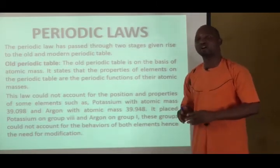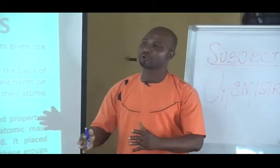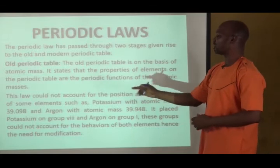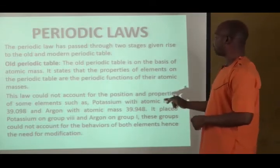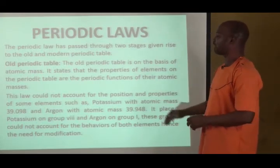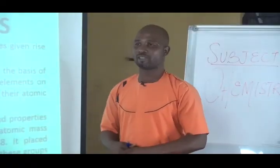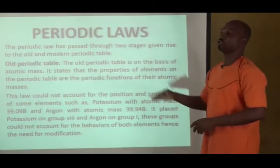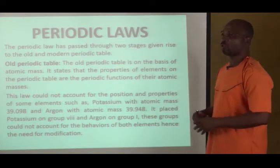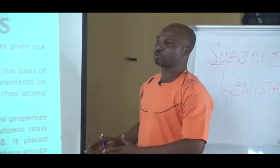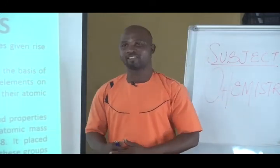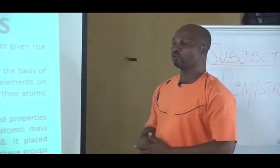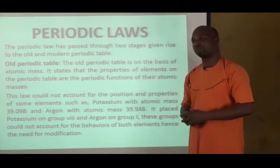Elements were arranged in order of their increasing atomic masses. There was a problem between argon and potassium: the atomic mass of potassium is 39.098 and that of argon is 39.948, meaning argon has a bigger atomic mass than potassium. Based on that arrangement, potassium would come before argon, placing potassium in group 8 and argon in group 1. Their positions could not be accounted for by their properties, because group 8 elements were inert while group 1 elements were very reactive. Hence there was a need for a modification of the periodic law.